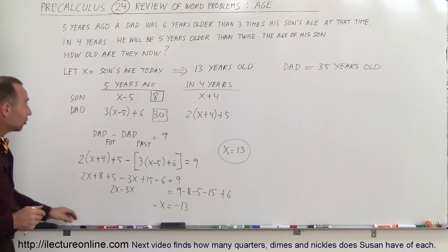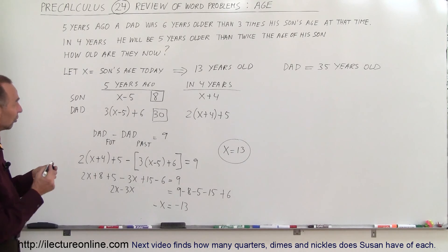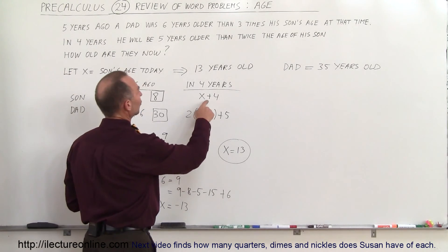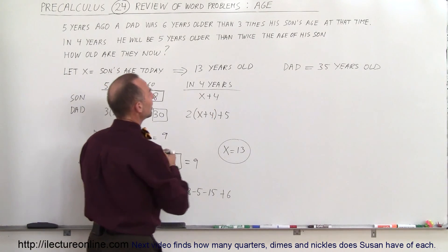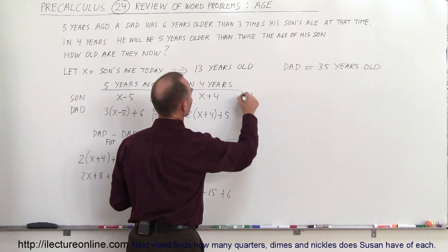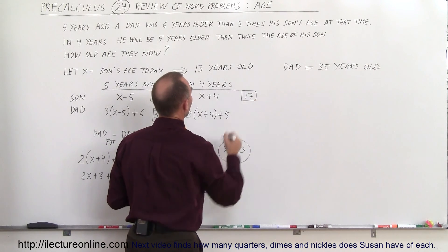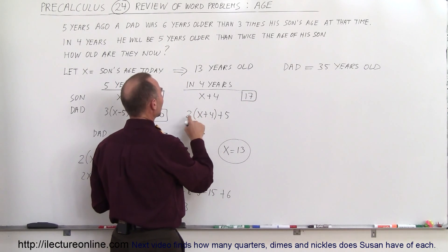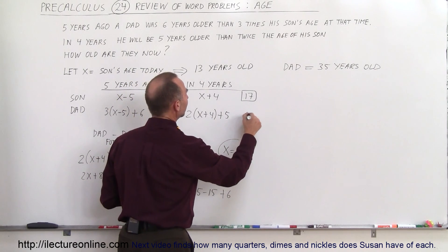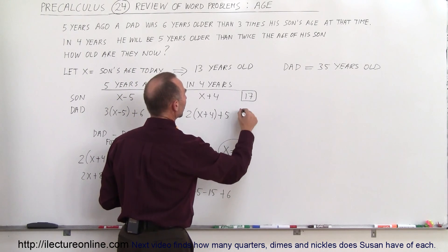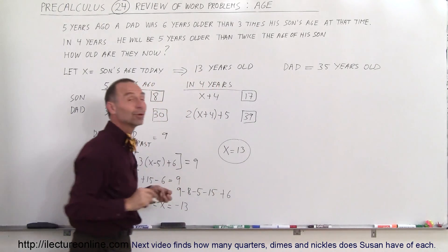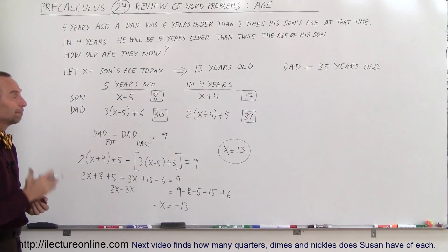Let's do a quick check by going four years into the future. In four years the son will be seventeen. Thirteen plus four is seventeen, times two is thirty-four, plus five is thirty-nine. And thirty-nine is indeed four years more than thirty-five, today's dad's age. So it looks like we did that correctly, and that's how we do it.